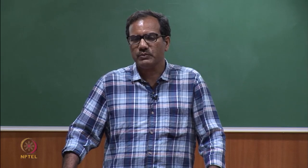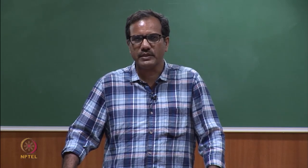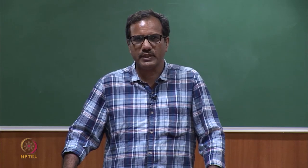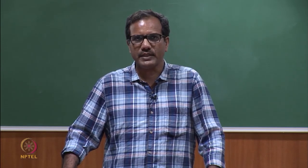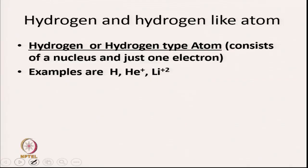Today I am going to show you how to calculate the energy associated with different electronic states of an atom. I will discuss only hydrogen and hydrogen-like atoms. In the next lecture, I will be discussing other atoms. What I mean by hydrogen or hydrogen-type atom is that they consist of a nucleus and just one electron — it is a one-electron system. For example, hydrogen, helium plus, or lithium 2 plus.